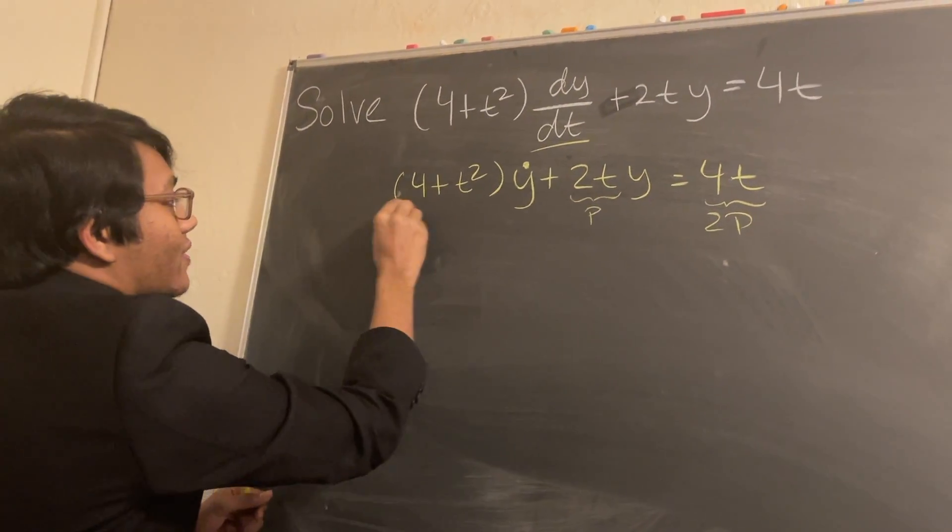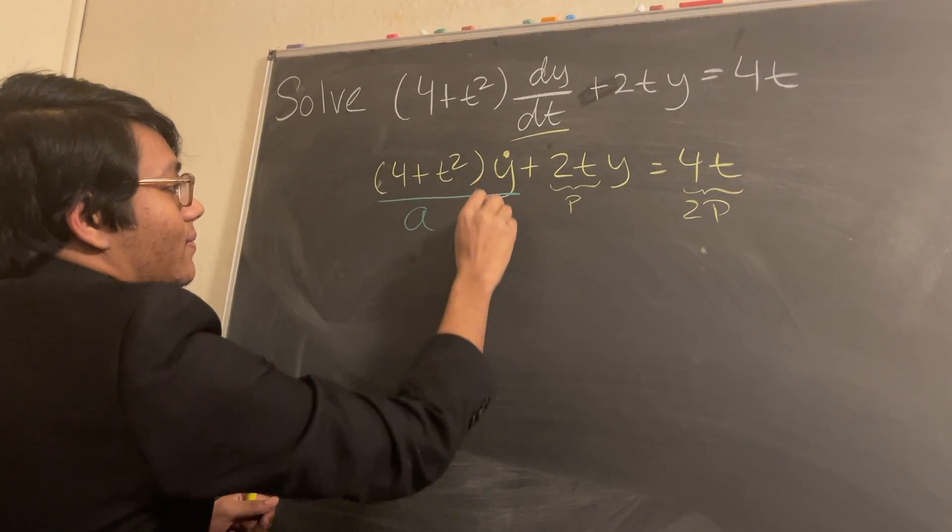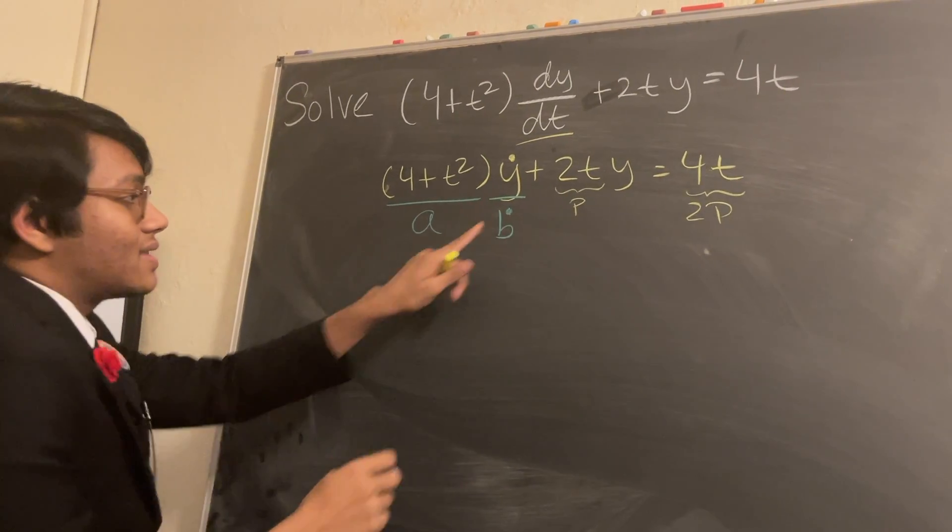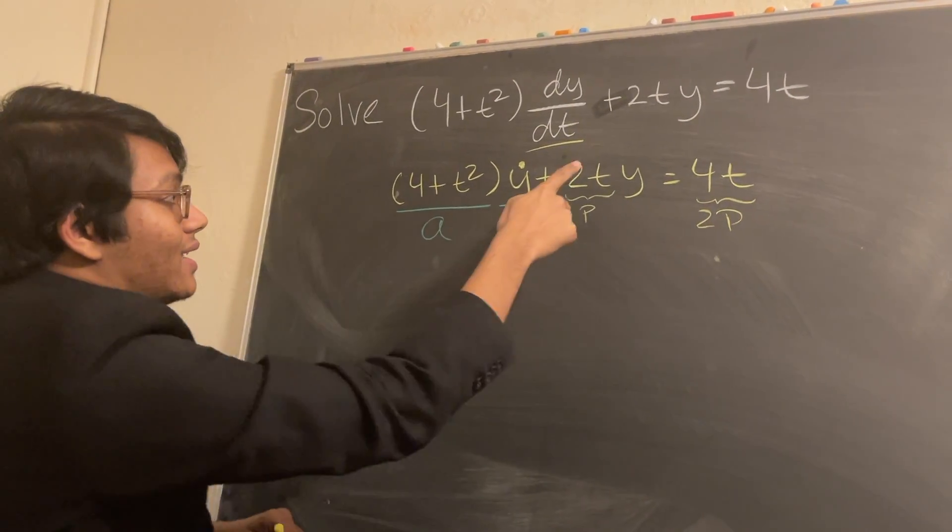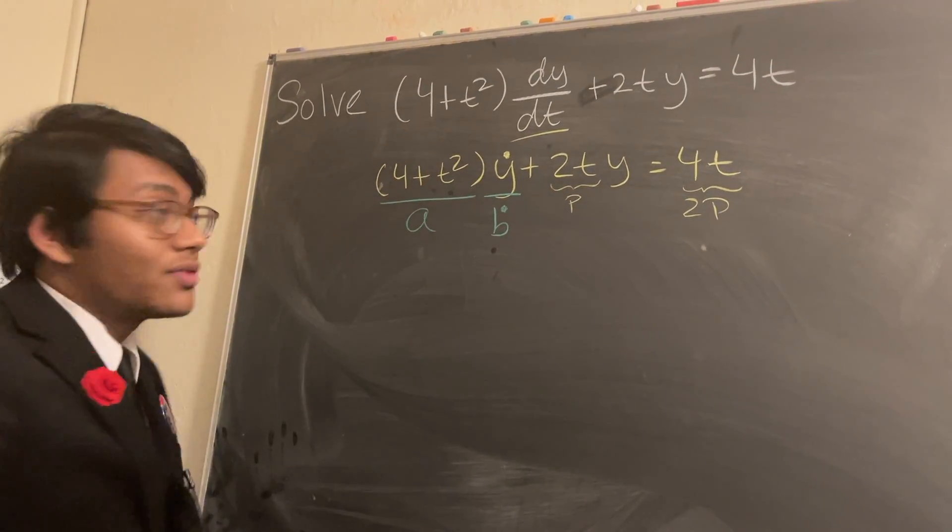Well, you have some function, let's call it a, and another function, b, but this term is the derivative of b times a. And here, if you notice, 2t is just the derivative of 4 plus t squared.